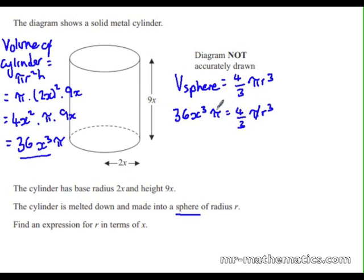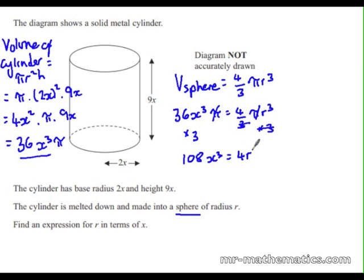We need to write it in terms of r. So we'll cancel out the π's and multiply both sides by 3 because of the denominator. So 108x cubed equals 4r cubed. Now we need to work out r on its own, so we'll divide both sides by 4. 108 divided by 4 is 27, so 27x cubed equals r cubed.